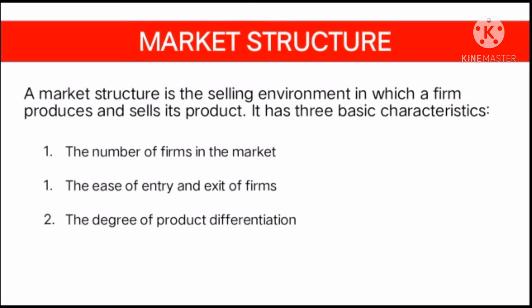Number two, the ease of entry and exit of firms. The second characteristic describes the obstacles, requisites, or barriers that a potential firm needs to undergo in starting up a business or entering the market. Some markets have barriers to entry, while others have less or no barrier at all.